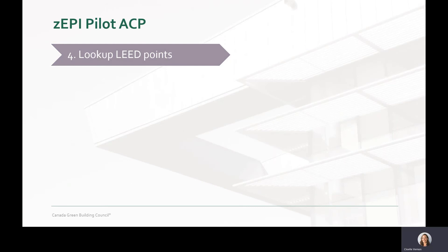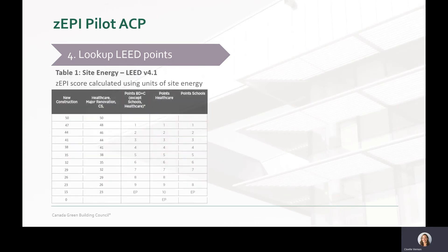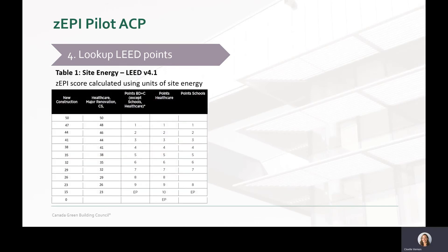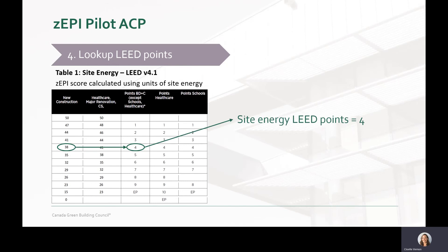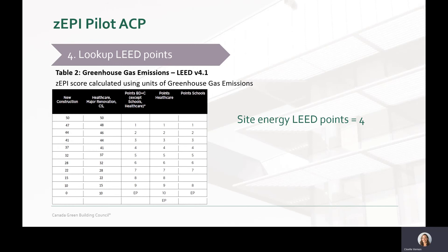The final step is to determine the LEED points based on the calculated ZEPI scores using units of site energy and greenhouse gas emissions. You can see here the points table for site energy under LEED version 4.1. The ZEPI score we calculated for energy was 36, which is below or better than the threshold of 38 in the table, but not quite meeting the threshold of 35. This means the project would earn 4 points for the site energy metric. Similarly, for greenhouse gas emissions, the ZEPI score we calculated was 24, thus meeting the threshold of 28, resulting in 6 points for greenhouse gas emissions reductions.